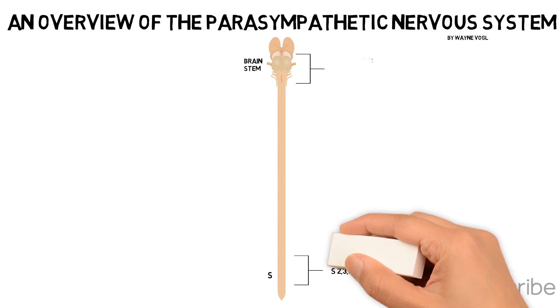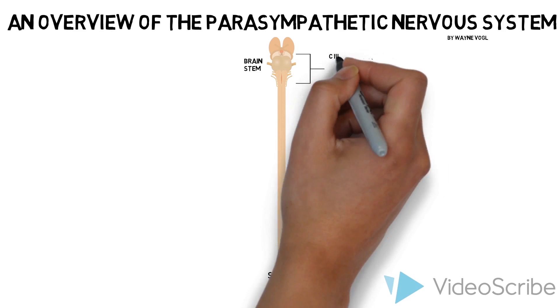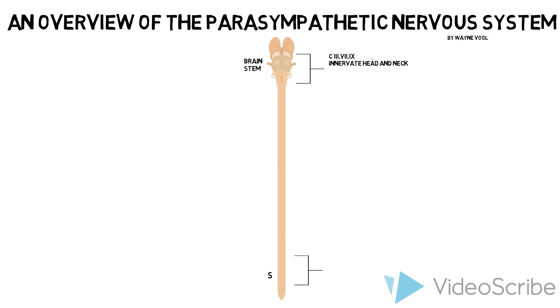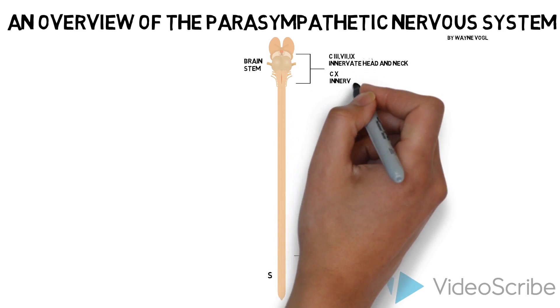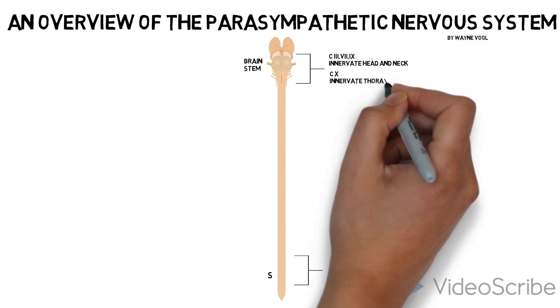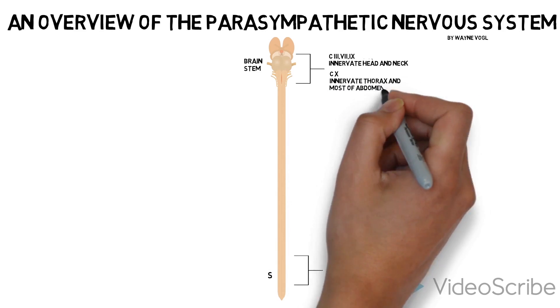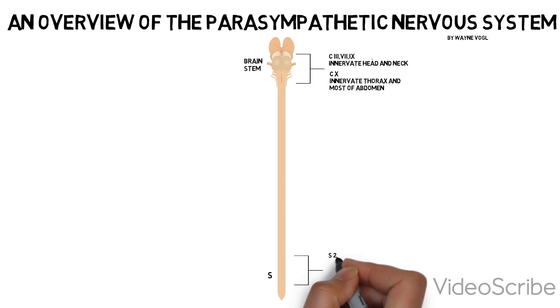Those neurons in cranial nerves 3, 7, and 9 innervate visceral structures in the head and neck. Those in cranial nerve 10 innervate viscera mainly in the thorax and most of the abdomen. Those in S2, 3, and 4 innervate viscera in the remaining parts of the abdomen and in the pelvis and perineum.